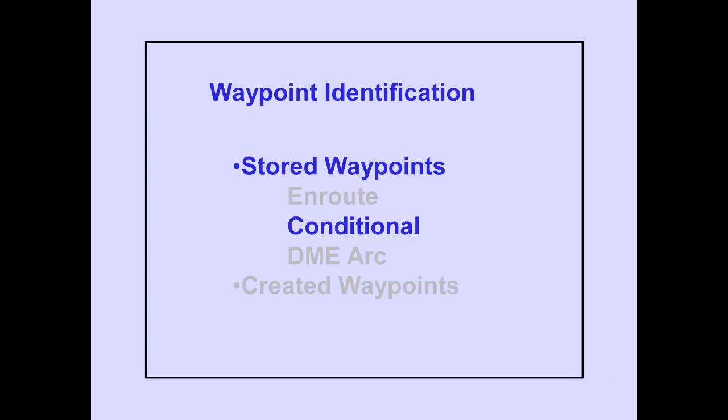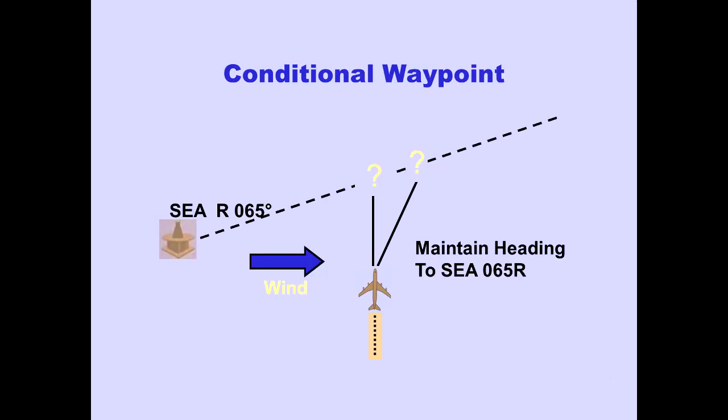Let's now discuss conditional waypoints. Conditional waypoints are waypoints that do not have a fixed geographical position. Variables such as wind can cause the geographical position of certain waypoints to change.